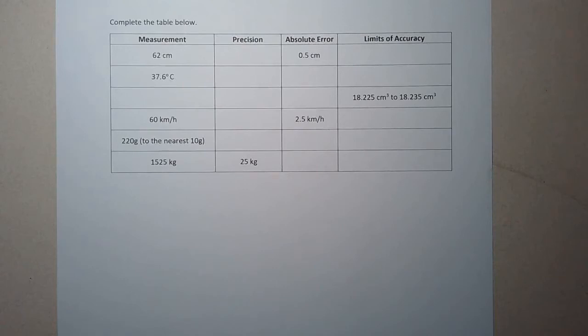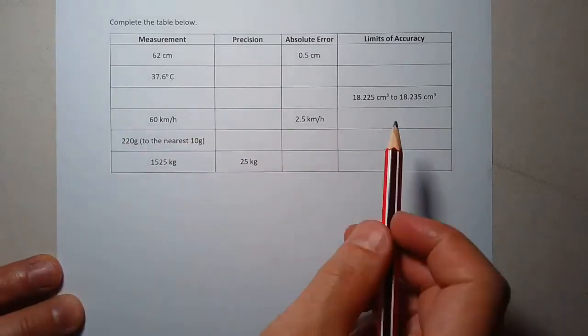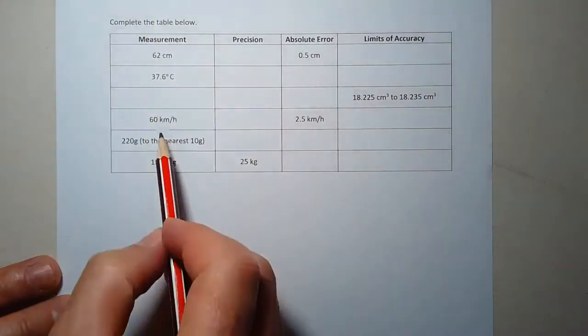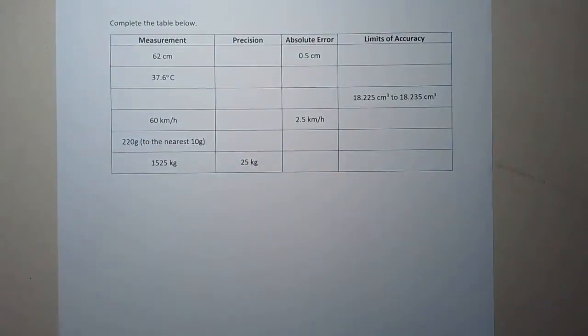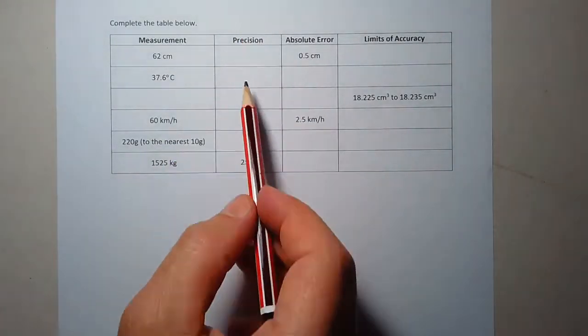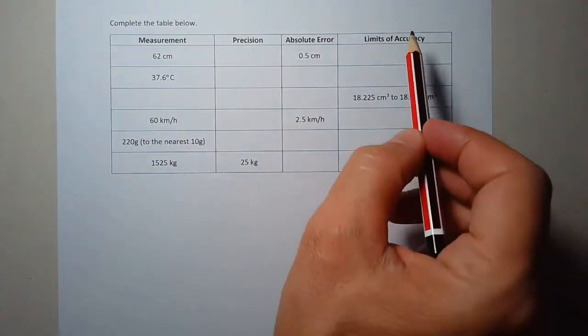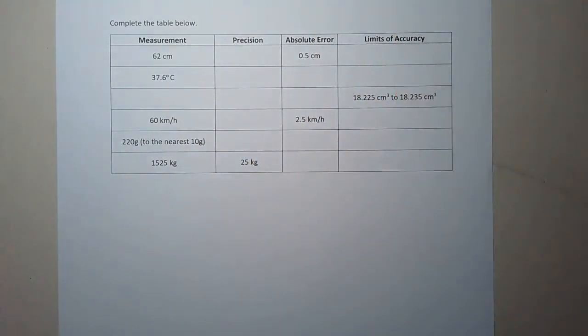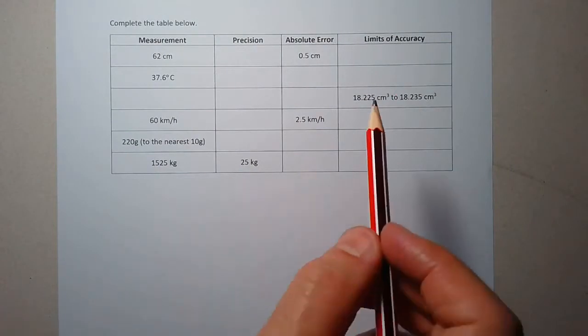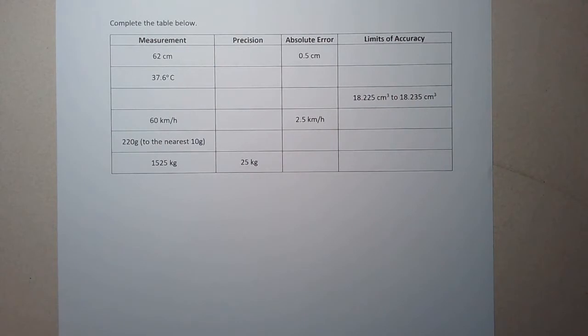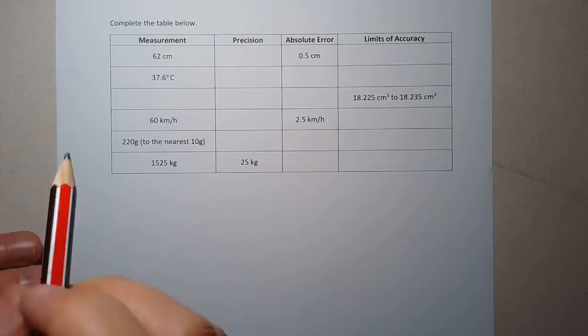Let's have a look at another example now involving absolute error. We're going to complete this table. The first column is the measurement shown on the measuring device. Precision is the smallest unit of measure, that's the second column. Absolute error is the third column and then we've got the limits of accuracy. In other words, we're taking into account the accuracy of the measuring device. What could the real or the true measurement be between which two values?